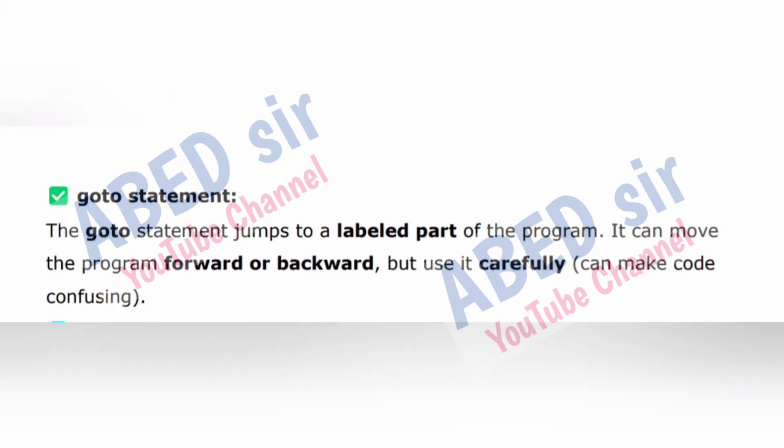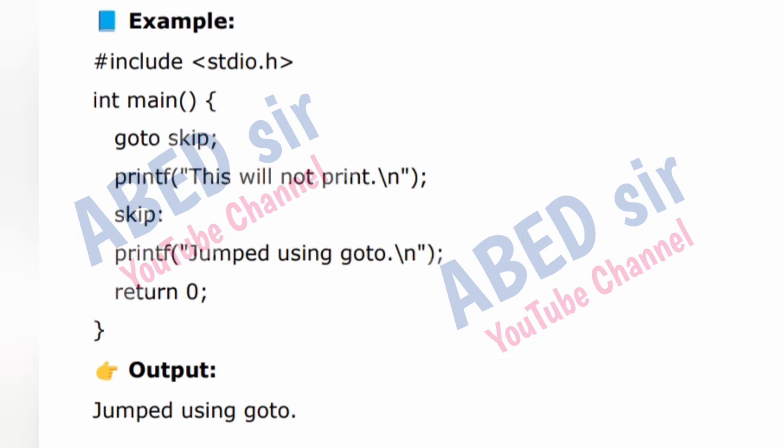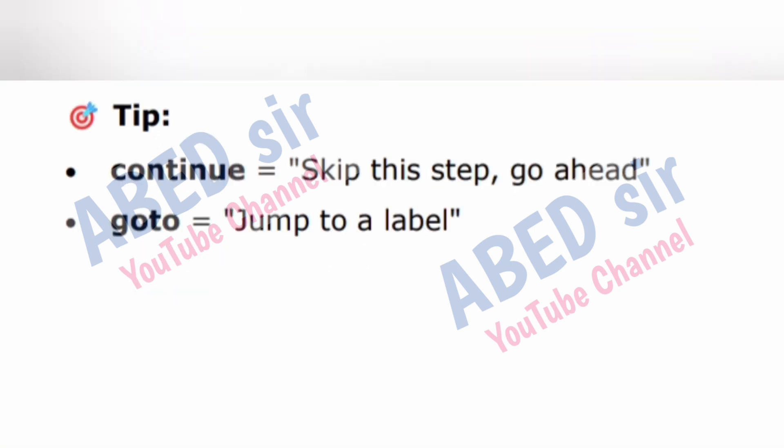Goto statement: the goto statement jumps to a labeled part of the program. It can move the program forward or backward, but use it carefully as it can make code confusing. Example: #include <stdio.h> int main() { goto skip; printf("This will not print\n"); skip: printf("Jumped using goto\n"); return 0; } Output: Jumped using goto. Tip: continue = skip this step, go ahead; goto = jump to a label.